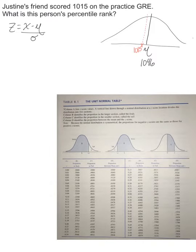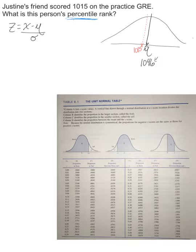Justine's friend scored 1,015 on the practice GRE. What is this person's percentile rank? Drawing it out: with mu of 1,046 in the middle, this person's score of 1,015 is below the mean. Remember: percentile rank means how many people did this person beat? Since their score is below the mean, we're looking at the tail.